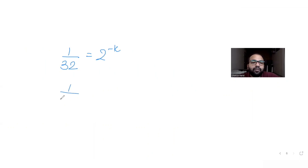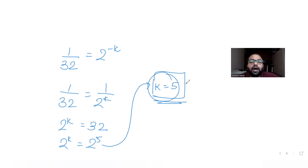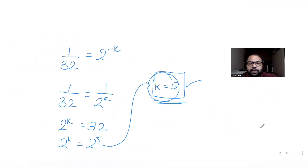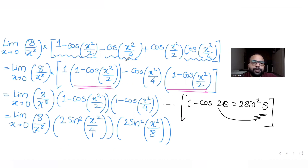We are given that the limit equals 2 raised to minus k, so 1/32 = 2^(−k), meaning 1/2^k = 1/32, so 2^k = 32 = 2^5. Therefore k equals 5. Looking at the options, option C (plus 5) is the correct answer.